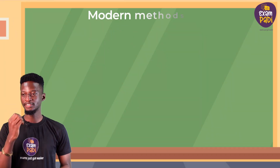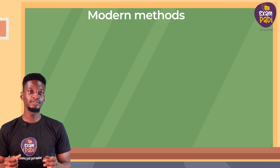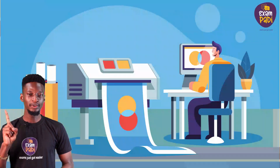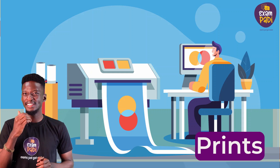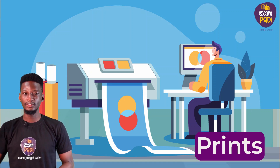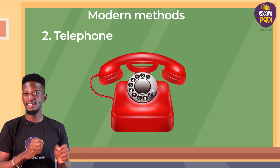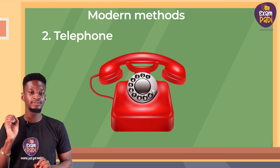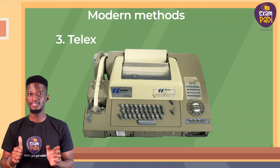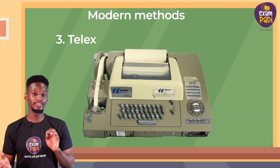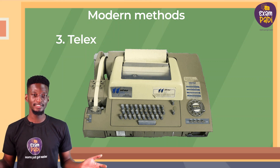The modern methods of information transmission usually use electronic communication channels. Below are some of the popularly known methods. 1. Print — this is the process of producing text and images on paper to send information from one place to another. 2. Telephone — this is an instrument designed for the simultaneous transmission and reception of the human voice. 3. Telex — a telex network is a station-to-station switched network of teleprinters, similar to a telephone network, using telegraph-grade connecting circuits for two-way text-based messages.